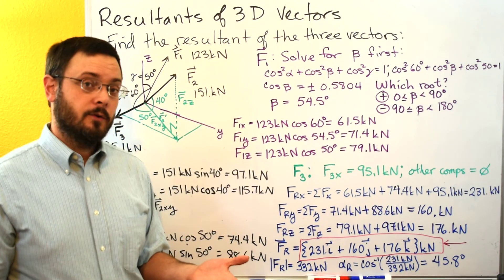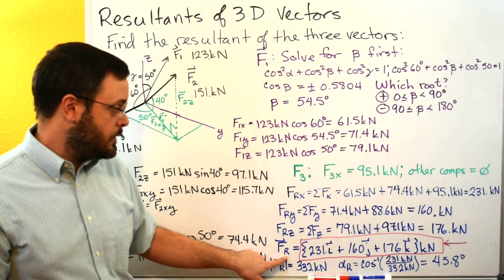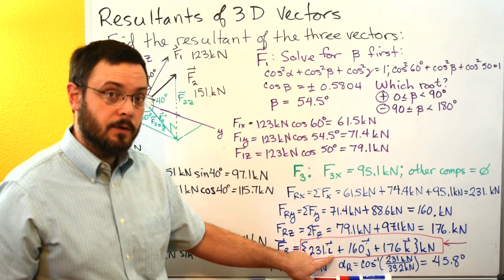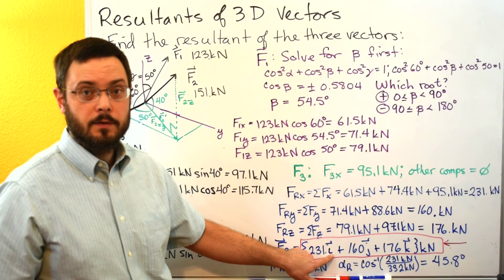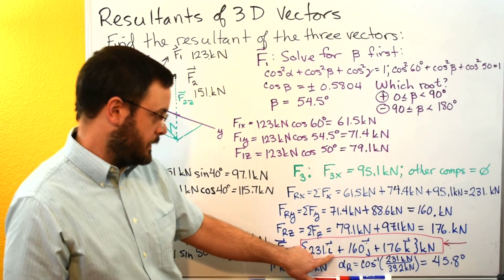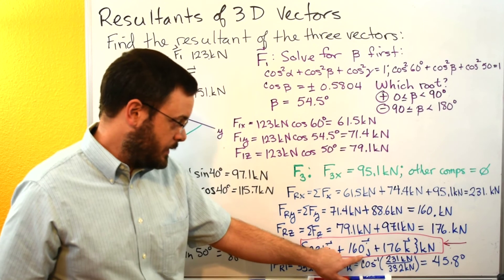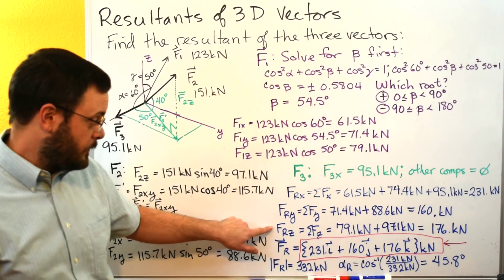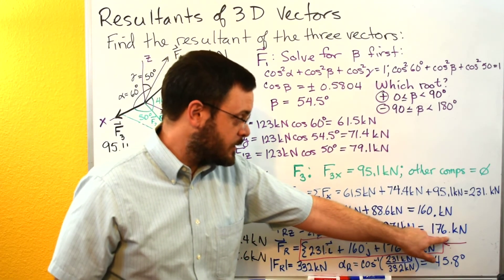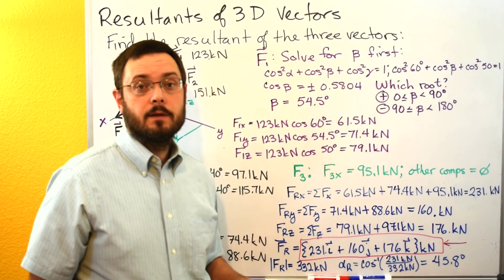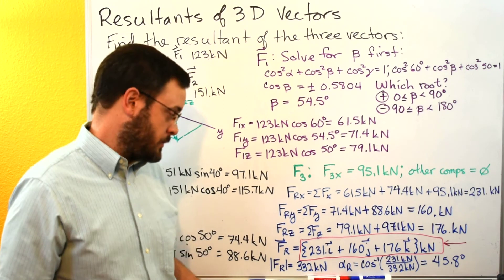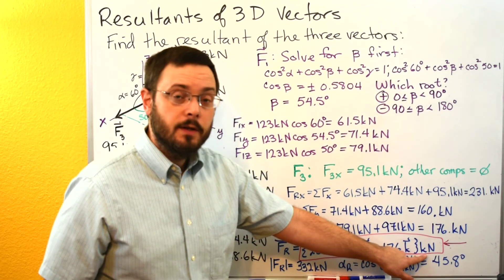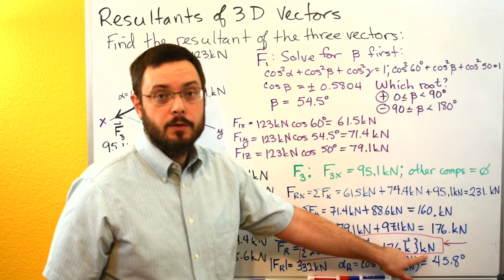Since the problem didn't specify a particular form, the easiest thing is to write it as a Cartesian vector. You write the x component followed by i — the unit vector in the x direction — so 231i. Then 160j for the y component, since j is the unit vector in the y direction. Then 176k for the z component, since k is the unit vector in the z direction. Put braces at the beginning and end and write the units — kilonewtons — at the very end.